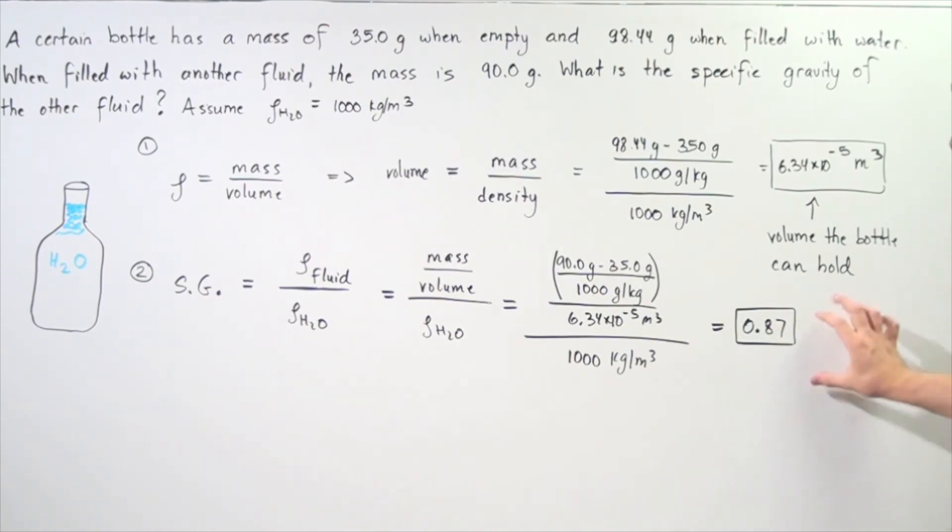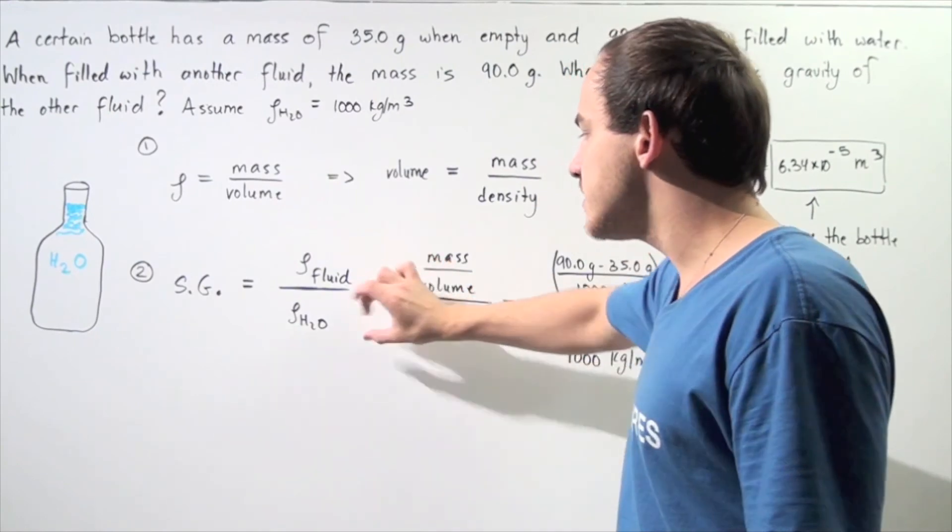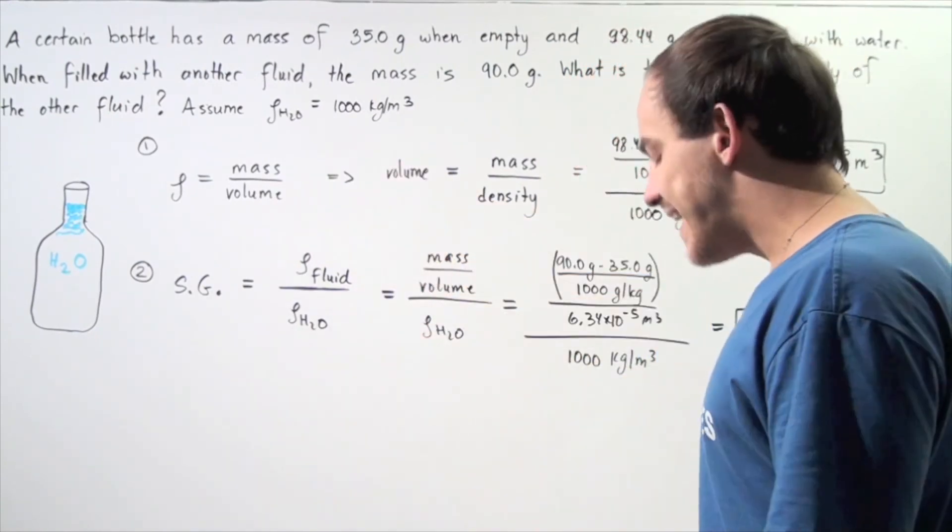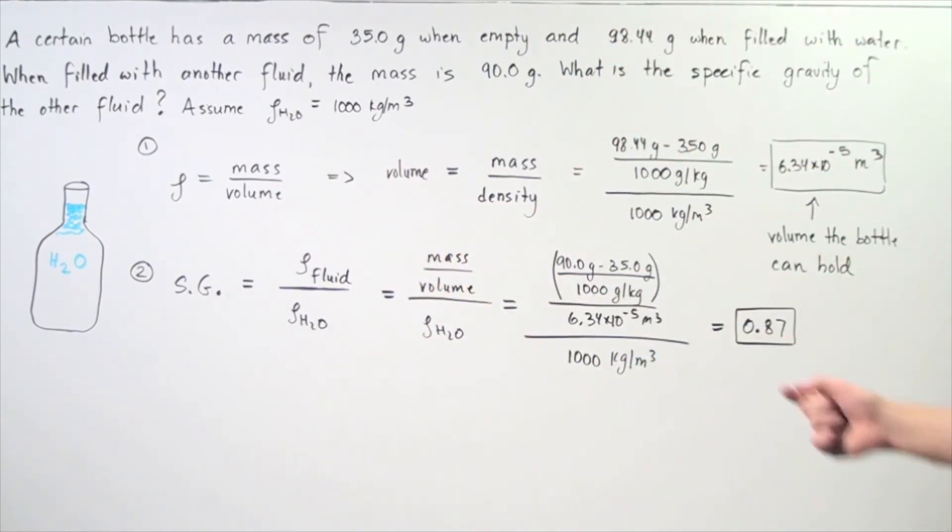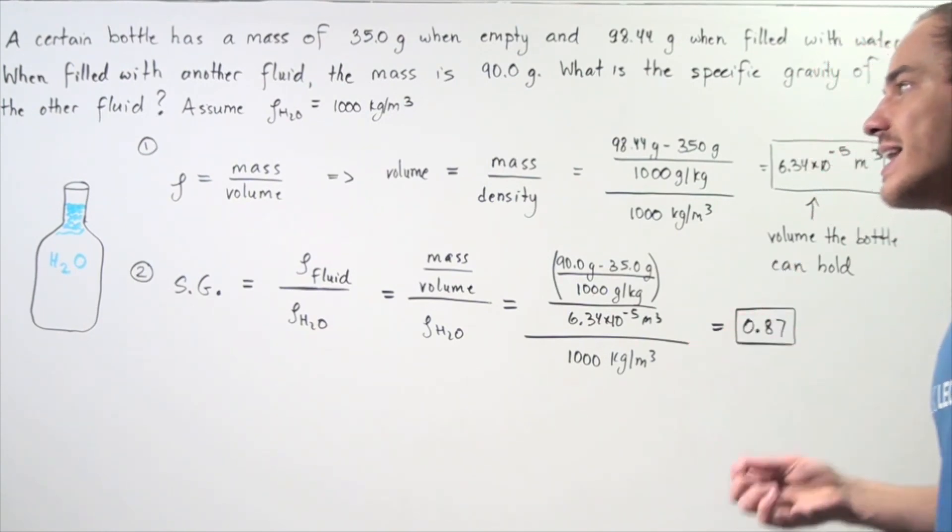So, notice that this quantity is unitless because this is a ratio. We have the same units divided by the same units, so the units cancel. So, this basically means that our water is more dense than the second fluid that we're using.